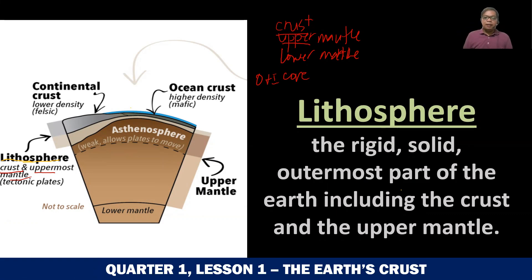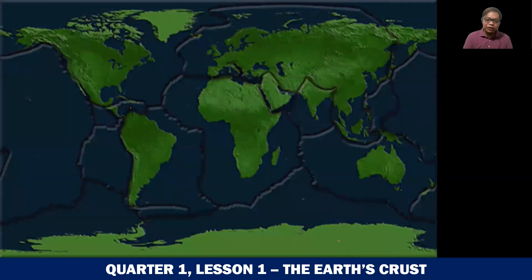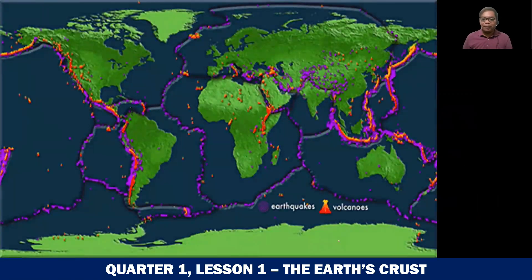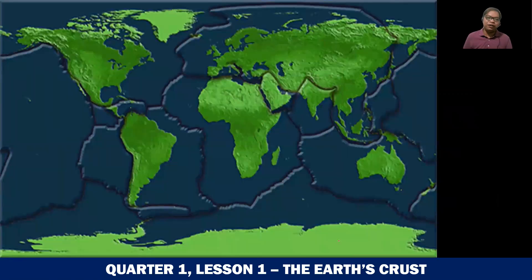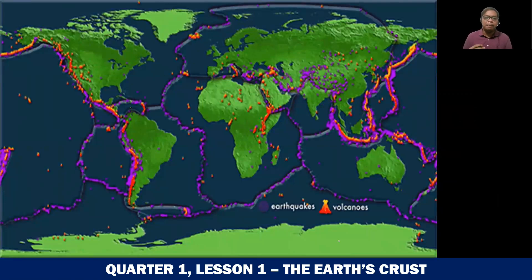Based on this definition, the lithosphere is the rigid, solid outermost part of the Earth, including the crust and the upper mantle. It is not flexible — it is hard. You might ask: we already have the crust, so why do we need this layer called the lithosphere? Because this layer is what is moving, and they are called the tectonic plates. The lithosphere is the outermost layer of the Earth that is continuously moving.